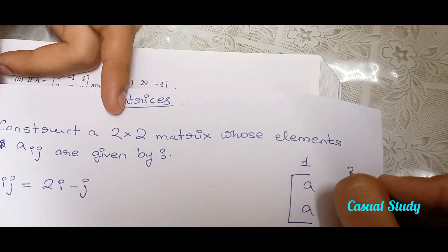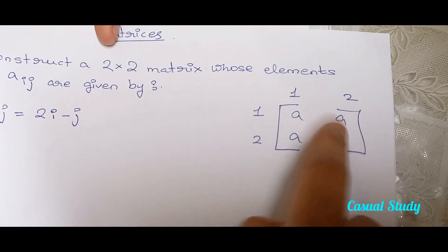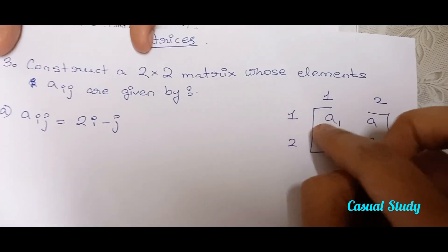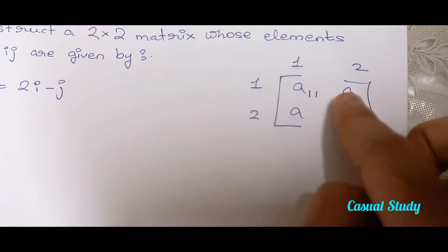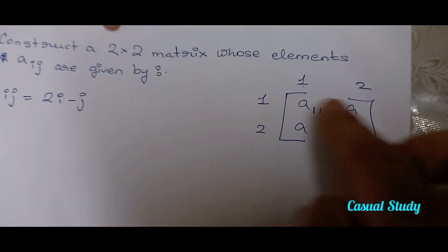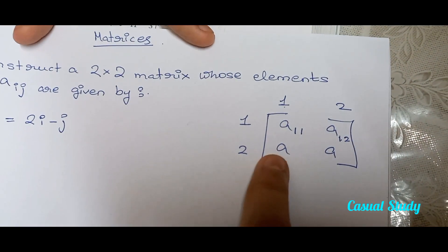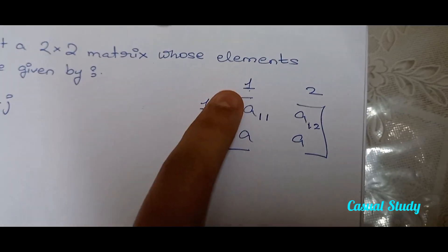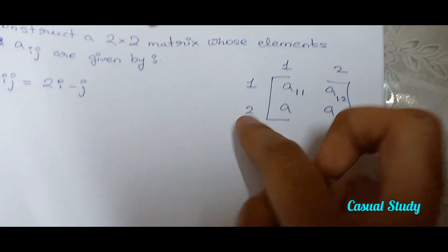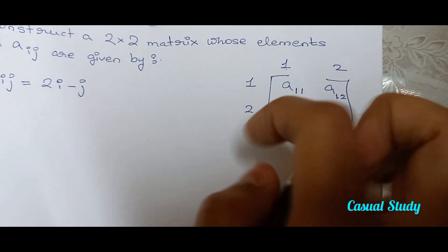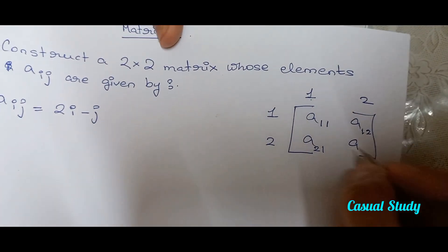This is basically column 1, column 2 — sorry, row 1, row 2. So this element is going to be row 1, column 1, so 1 and 1. This element is going to be row 1 and column 2, so it's going to be 1 and 2. This element is row 2, column 1, so it's going to be 2, 1. This element is row 2, column 2, so it's going to be 2, 2.